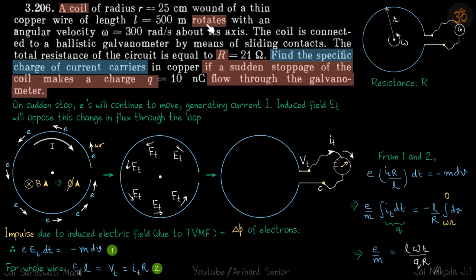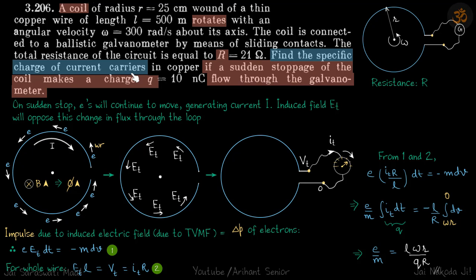Here we are given a coil that is rotating with an angular velocity omega. The ends of the coils are connected to a galvanometer. These contacts are sliding, so even while the coil is turning, the ends are always connected to the galvanometer. The radius of the coil is given as small r and resistance is also given. We need to find the specific charge of current carriers.